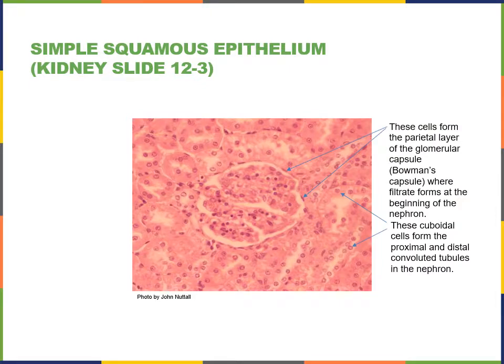Here we see another example of simple squamous epithelium from the kidney. The round structure in the center is a renal corpuscle, a structure where the process of filtration occurs, where liquid is forced out of the blood. The outer layer of the renal corpuscle — the parietal layer of the glomerular capsule, or Bowman's capsule — is a simple squamous epithelium.